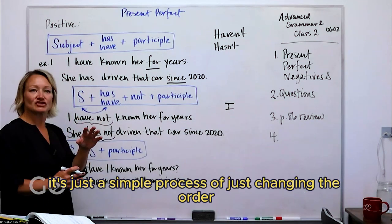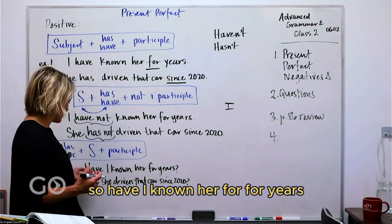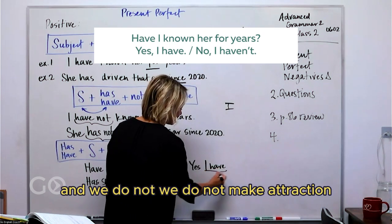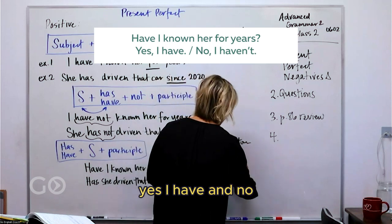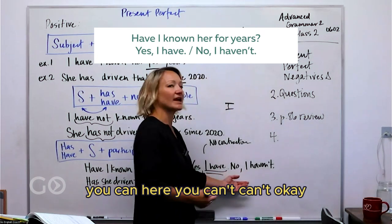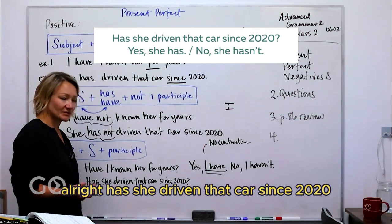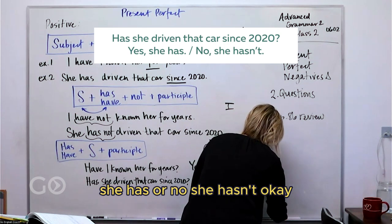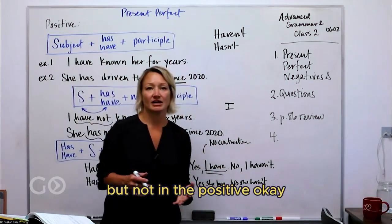It's just a simple process of changing the order. The next part is how do we answer these questions. 'Have I known her for years?' — Yes, I have. And we do not make a contraction here on the positive, on the yes. Yes, I have. And no, I haven't — you can contract this in the negative, but not in the positive. 'Has she driven that car since 2020?' Yes, she has. Or no, she hasn't. Just using our contractions in the negative, but not in the positive.